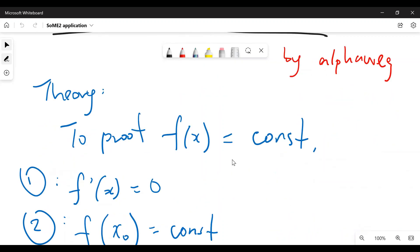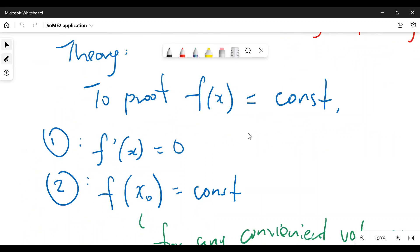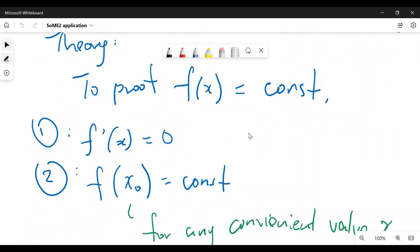To prove that some function is a constant, first thing you've got to do is show that derivative is zero. I mean, this is pretty self-explanatory because if the derivative is the rate of change, but the function is not changing, that means it's a constant.